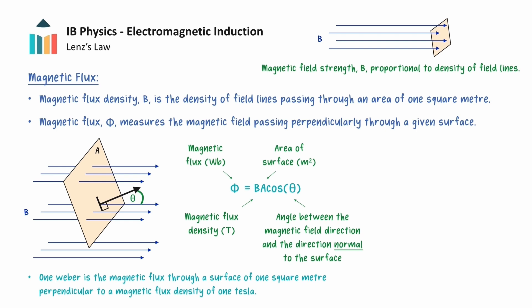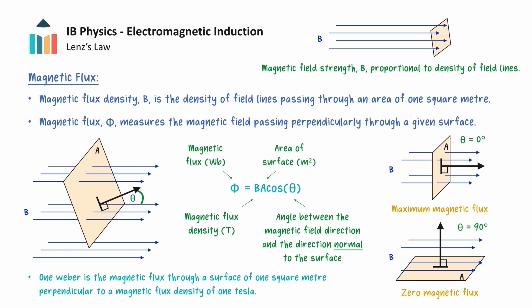Magnetic flux can be intuitively seen as the number of magnetic field lines that cut through the surface. We can deduce that the magnetic flux is maximized when the magnetic field is perpendicular to the area of the surface, as all of the magnetic field lines will cut through the surface. Note here that the normal to the surface is parallel to the magnetic field, so the angle theta will be equal to 0 degrees. On the opposite end, the magnetic flux through a surface will be 0 when the magnetic field is perfectly aligned with the plane of the surface, because the surface is not pierced by any magnetic field lines.